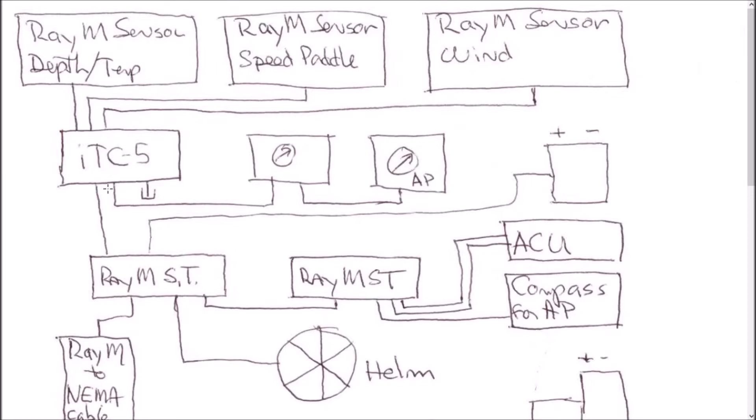They're all connected with regular analog cables into something that Raymarine calls their ITC5. The ITC5 takes the old analog inputs and puts it onto what Raymarine calls their SeaTalk network. The ITC5 also connects to the gauges. So these are my wind gauges and this is my autopilot gauges. Those two are connected together.